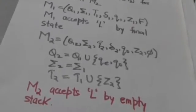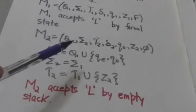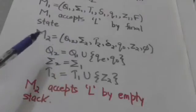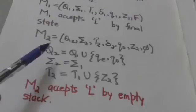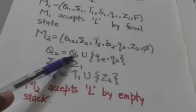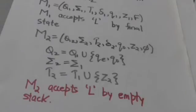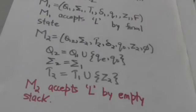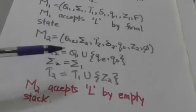M2 is described by this 7-tuple. Q0 is the initial state of pushdown automata M2, and Z2 is the stack start symbol of M2. M2 contains all states of M1 and two other states: Q0 and QE, where Q0 is the initial state of M2. The input symbols are the same in both M2 and M1.